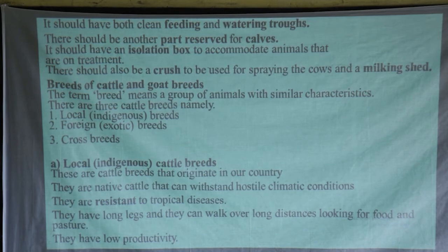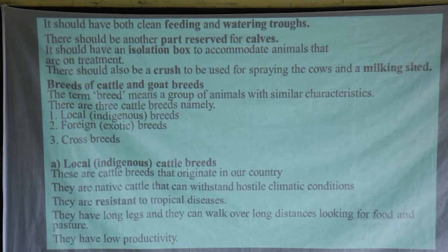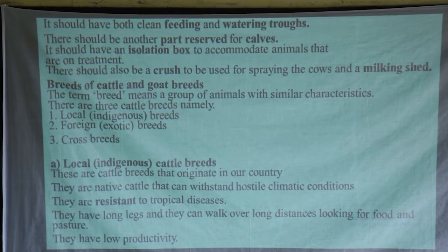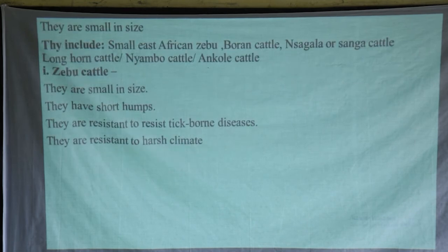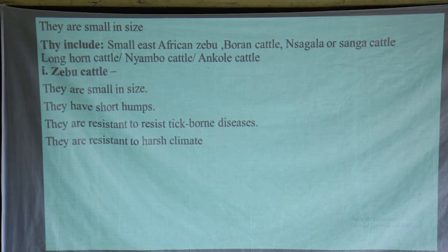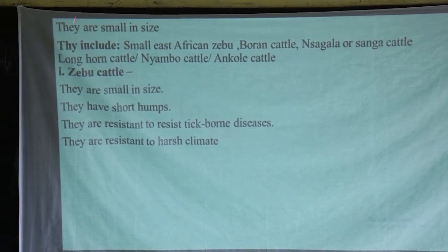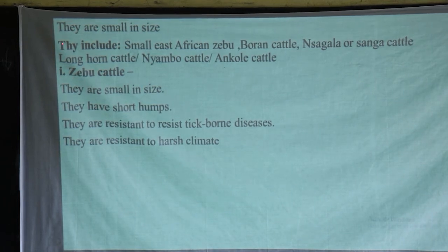Local breeds have low productivity. In terms of milk production, you can easily have like three to five liters — it is of low productivity. In terms of meat production, they also produce less meat. But of good quality — local breeds produce quality milk and quality meat, majorly because of the way they feed on natural feeds from the environment. They are also small in size compared to exotic breeds.